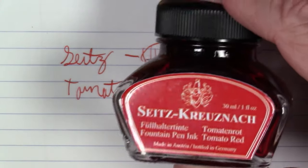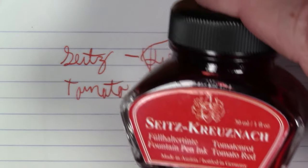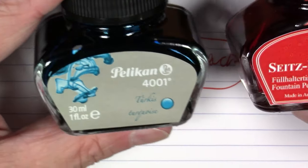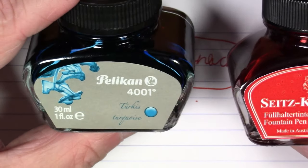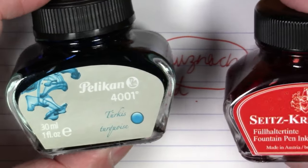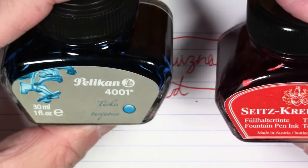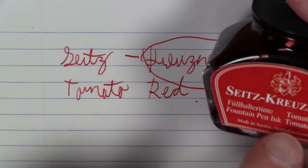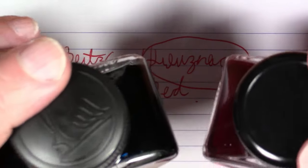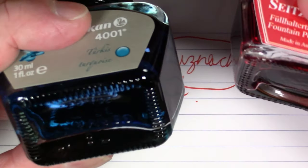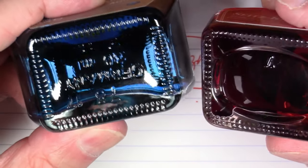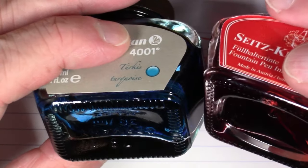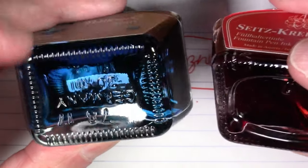So this comes in this 30 milliliter bottle. If this shape of this bottle looks familiar, it should. Pelikan inks come in literally the exact same size and shape bottle. Which led me to think these are two German companies that both sell ink. Maybe the same factory is cranking out ink for both of these. I'm inclined to think not. This does say made in Austria, bottled in Germany.